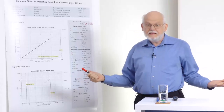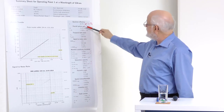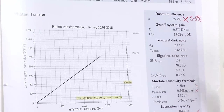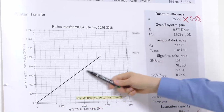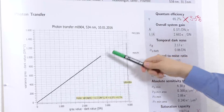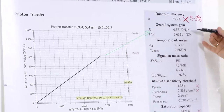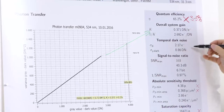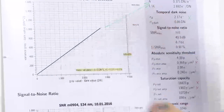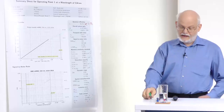Another source of uncertainty is the overall system gain, which transfers measurements from DNs into electrons and is given by the slope of the photon transfer curve. If this slope is not correct, then everything converting from what you measure to electrons will be influenced by uncertainties in the gain estimation. So everything that has units of electrons will be influenced by this effect.